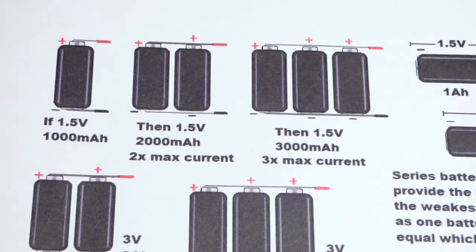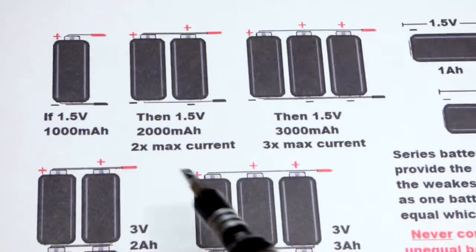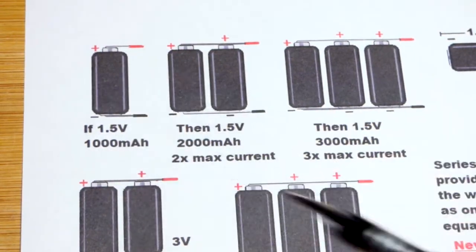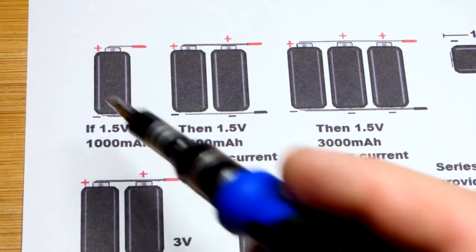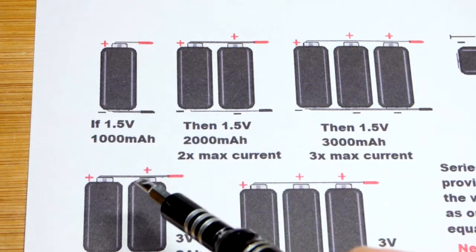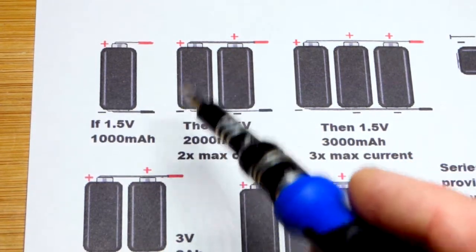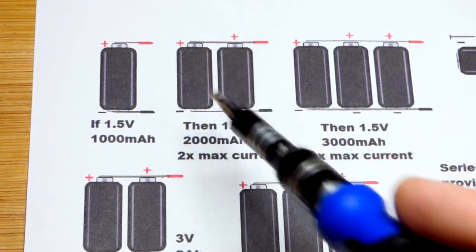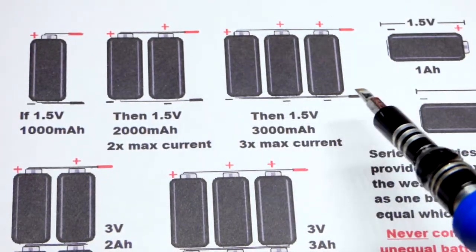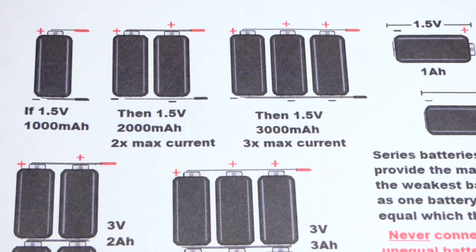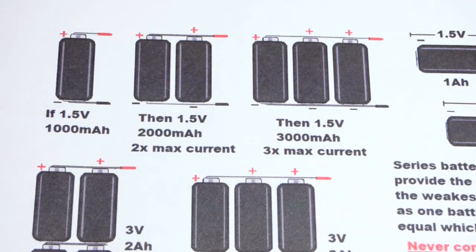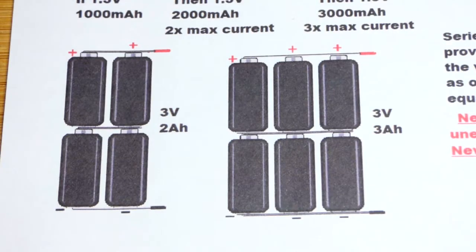Now also there's a current limit. If a battery can only provide one amp of current, probably even less than that if it's a small battery, but if it can provide one amp of current, if you have two of them then it can provide two amps of current because each one's only providing one. And if there's three of them in parallel then you can get a total of three amps of current over time because each one is only providing one amp of current itself.